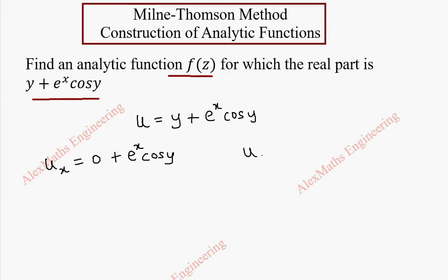In the same way, let's find u_y, the partial derivative with respect to y. The derivative of y is 1, e^x is constant which stays as it is, and the derivative of cos y is minus sin y.